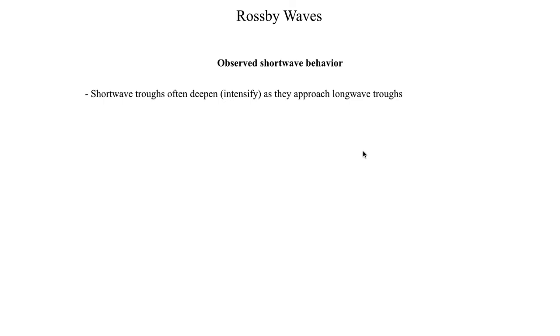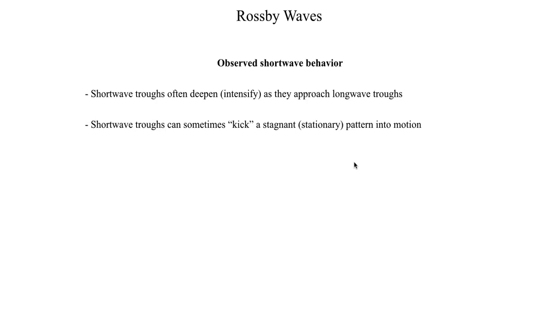I want to wrap up this final segment by talking a little more about short waves and some of the phenomena frequently observed in the atmosphere. One thing that short wave troughs can do is as they approach a long wave trough — which is usually not moving very fast — they can deepen and intensify as they get close to the long wave trough. So a weak short wave comes along, encounters a long wave trough, and then the short wave suddenly intensifies. Also, sometimes a short wave trough can kick a blocking pattern into motion — a good short wave can disrupt the long wave pattern and set the upper air pattern in motion so that you no longer have a blocking pattern.